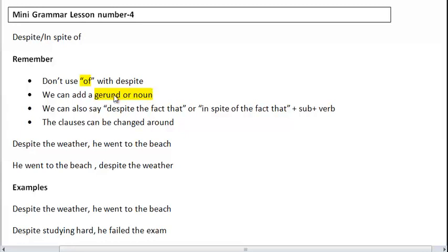Now we can use despite or in spite of with a gerund or a noun. So we can say despite the weather or in spite of the weather, or we can say despite studying hard or in spite of studying hard. He didn't pass the exam, for example.